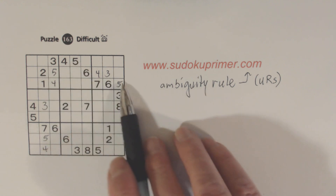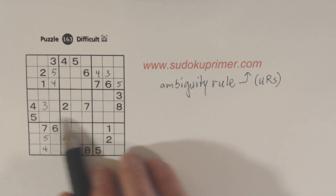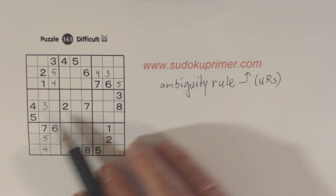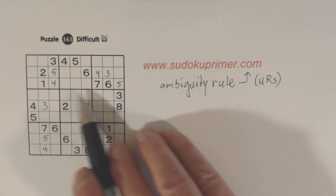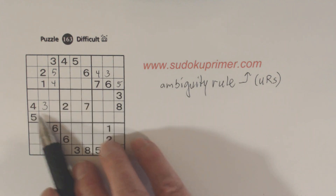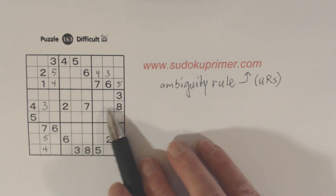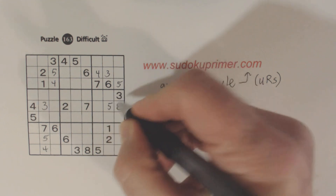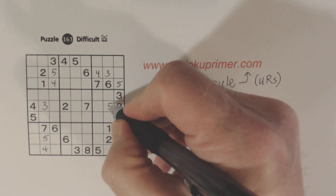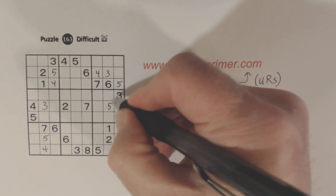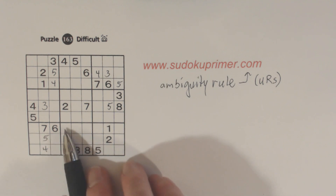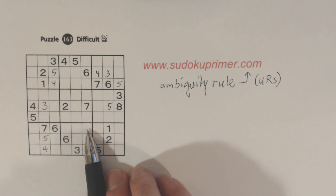We're on fives now. There are ghost fives here and a five there, so one of these is a five — we can fill in that one. Five, five, five.